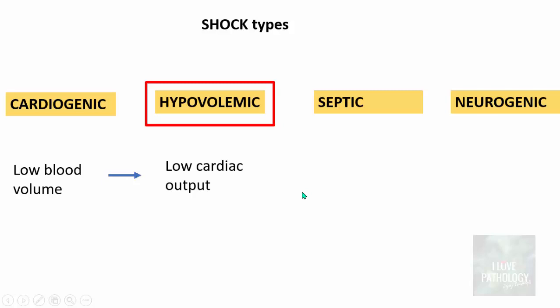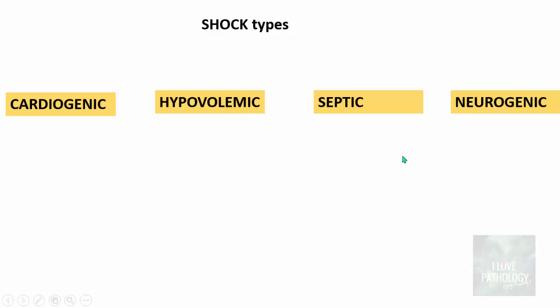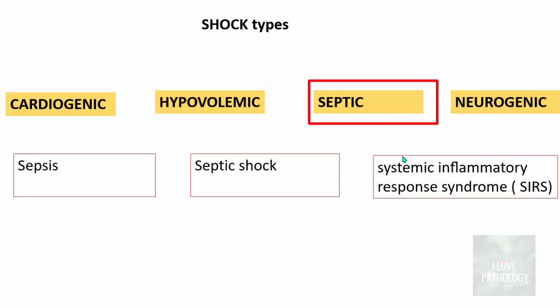The second type is hypovolemic shock. Here there will be low blood volume and that leads to low cardiac output. Instances like massive hemorrhage and extensive burns which might result in extensive fluid loss lead to low blood volume and then low cardiac output — that is hypovolemic shock.